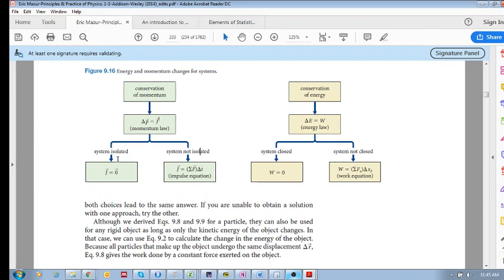That means there's no momentum transfer across the boundary. But if J is not zero, then that means the system is not isolated. That means there's an impulse, sum of the forces delta T applied across the boundary, external force.